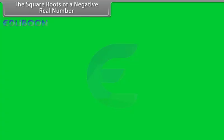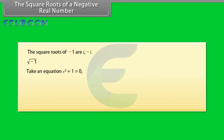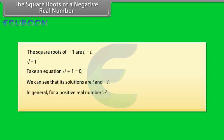The square roots of a negative real number. The square roots of minus 1 are iota and minus iota. This symbol means iota. Take the equation x squared plus 1 equals 0 — its solutions are iota and minus iota. In general, for a positive real number a, the square root of minus a equals square root of a into square root of minus 1, which equals square root of a into iota.